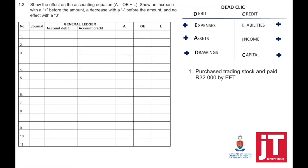Transaction 1: purchase trading stock and paid $32,000 by EFT. A cash payment by EFT is recorded in your CPJ. From the CPJ, bank is always credited, so trading stock will be debited. Bank and trading stock are both classified as assets, which means assets will be plus/minus $32,000, owner's equity is zero, liabilities is zero. Transaction 2: paid $5,600 cash for the delivery of goods purchased. Transport for goods delivered to us must be added to the trading stock account. From the CPJ, bank is credited and trading stock is debited. Both are assets, so it will be plus/minus $5,600, zero for owner's equity and liabilities.